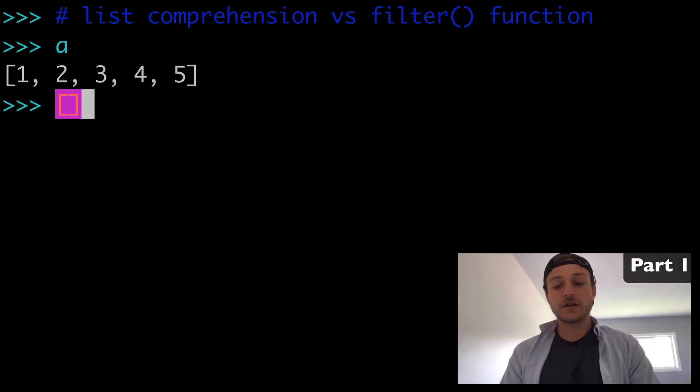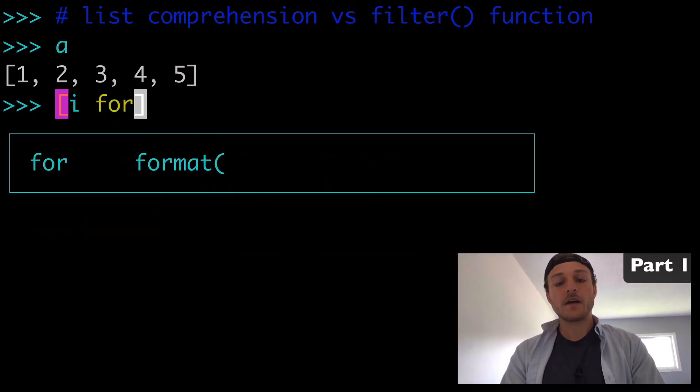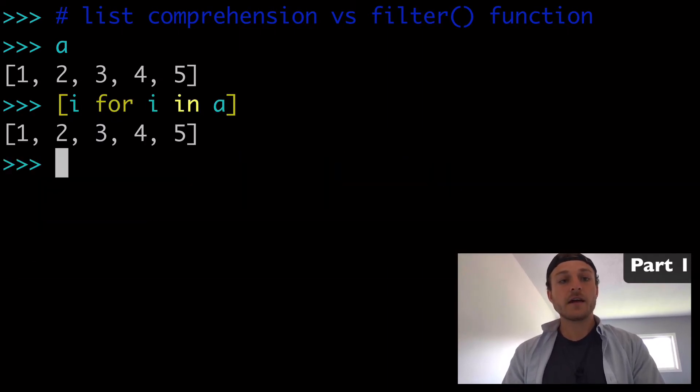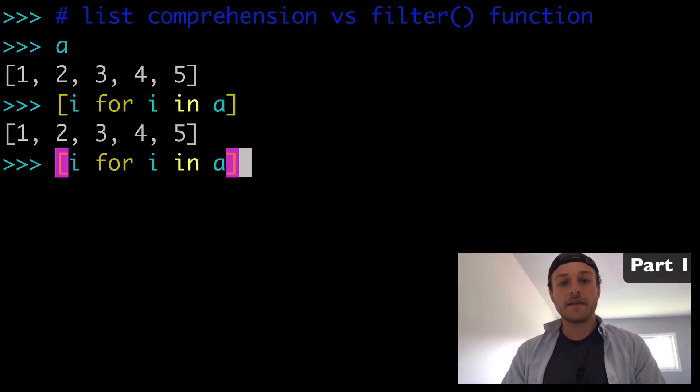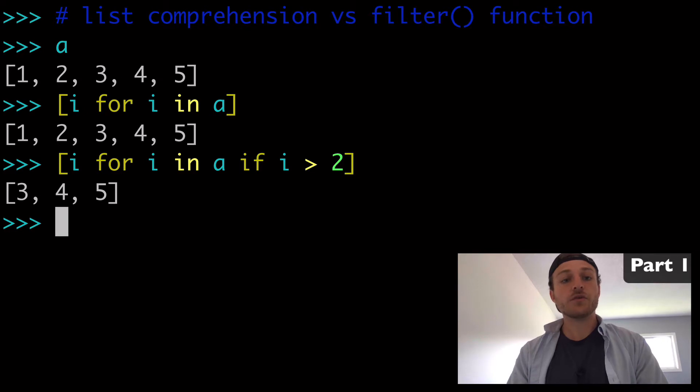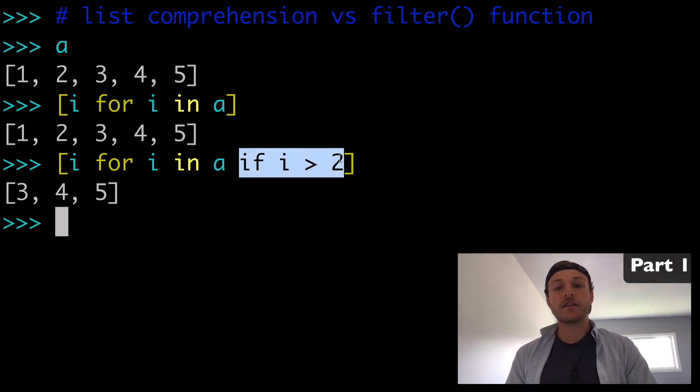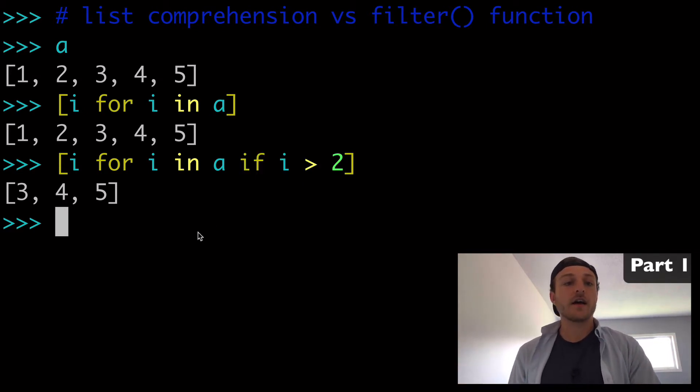So I'll show you first with a list comprehension. You might do something like i for i in a, and that returns everything. And then we add our filter to the right, where we might say if i greater than 2. So that is our filter right here. This if statement acts as a filter in a list comprehension context. And then we return 3 through 5.